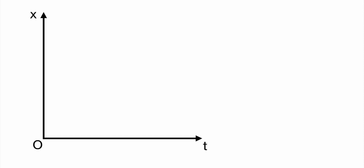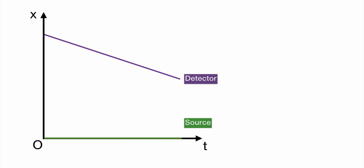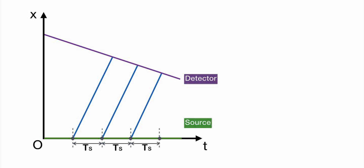Let's draw the position-time graph for the case where the detector is moving and the source is at rest. The source is at rest at the origin. The detector is approaching toward the source with a constant velocity. The source is emitting a sound with a regular interval. The period of emission is Ts. The emitted sounds generated at each moment are transferring with sound velocity and then reach the detector. The detected sound period is Td.